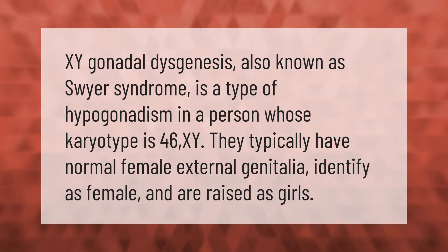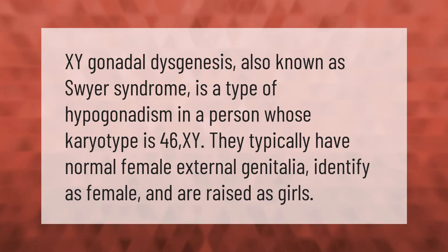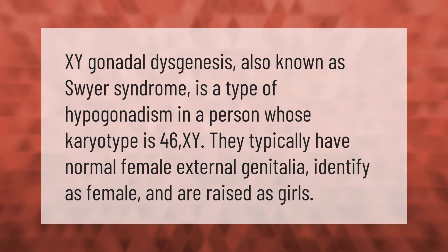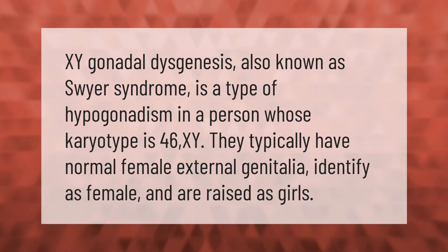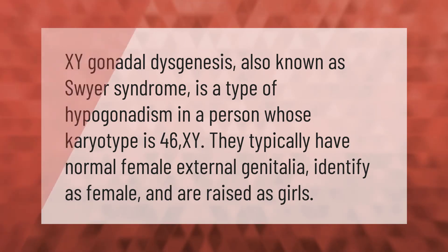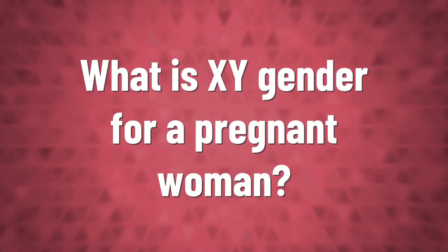XY gonadal dysgenesis, also known as Swyer syndrome, is a type of hypogonadism in a person whose karyotype is 46,XY. They typically have normal female external genitalia, identify as female, and are raised as girls.